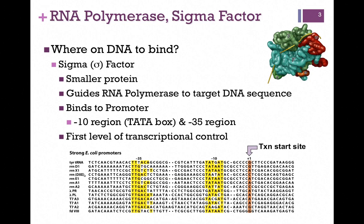In other words, there are multiple sigma factors. If a different sigma factor binds to the core enzyme, then it will bind to different promoters and therefore different genes will be expressed.